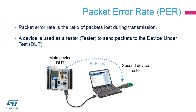The packet error test involves two devices. When no specific test equipment is available, it is possible to use two STM32WB devices to test the Bluetooth low-energy link. One device is used to send packets and the second one receives the packets. It is possible to compute the packet error rate from the number of transmitted and received packets. The STM32 Cube Monitor RF tool automatically counts the number of sent and received packets and can also perform multi-channel measurements.